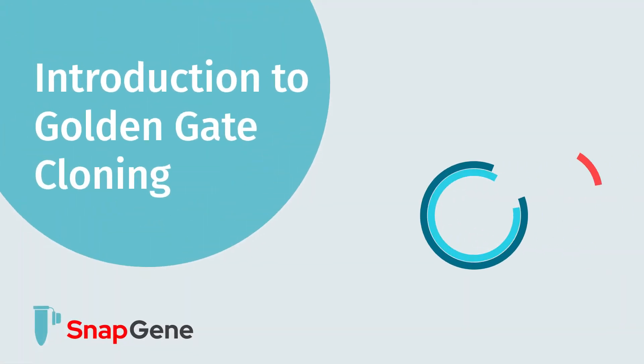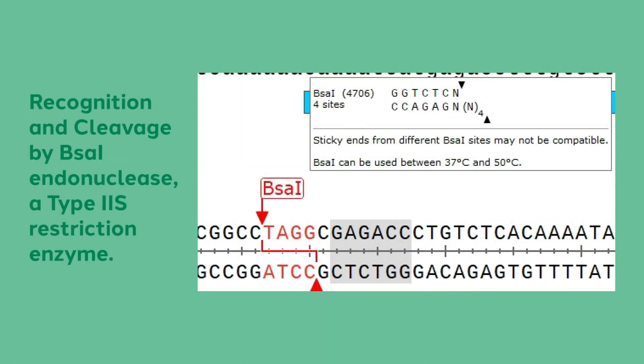In this video we will describe Golden Gate cloning. Golden Gate cloning is a cloning technique that exploits unique features of type 2S restriction enzymes. Type 2S restriction enzymes are characterized by cleaving outside of their recognition sequence. The sequence present at the cleavage site is determined based only on its location relative to the recognition sequence.